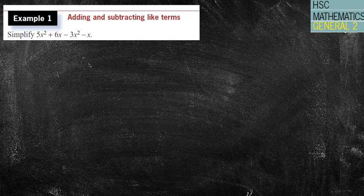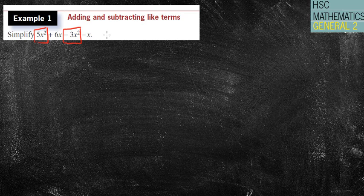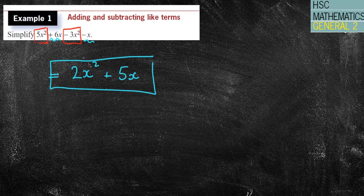So let's have a look at this question. We've got 5x squared plus 6x minus 3x squared minus x. I'm going to put a square around the x squareds. Again, making sure I keep the negative in front of it. We've got 5x squared minus 3x squared, which equals 2x squared. Then, I've got 6x minus 1x, which is positive 5x. And thus, I have my simplified answer.